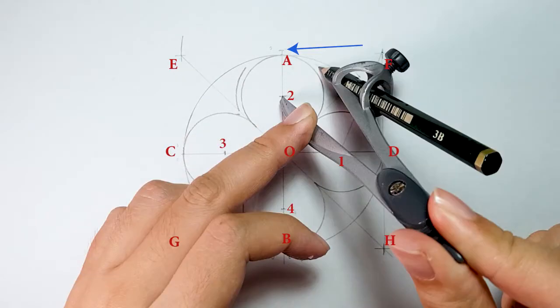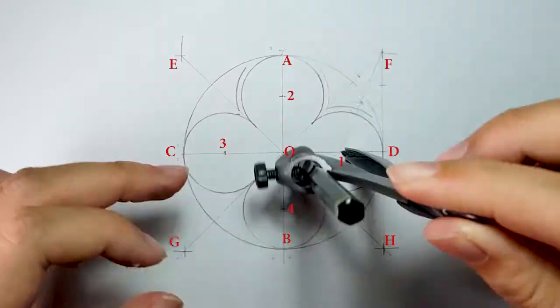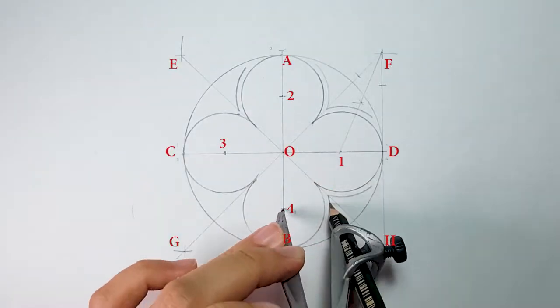Don't forget to draw a mark on lines where the outside of the circle as we will draw a large circle later. Repeat this step on point 1, 3, and 4.